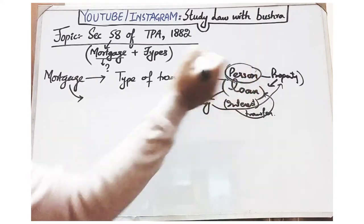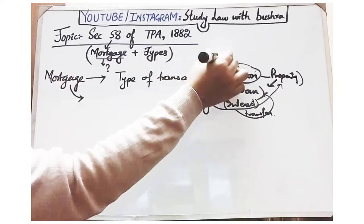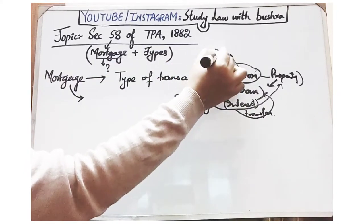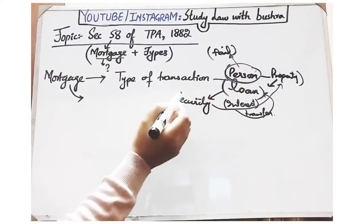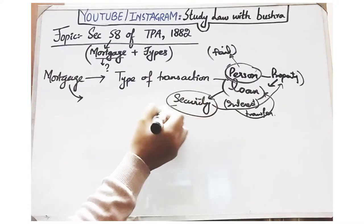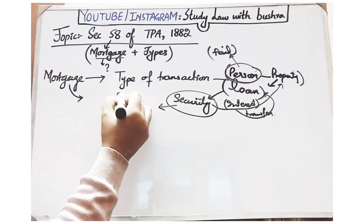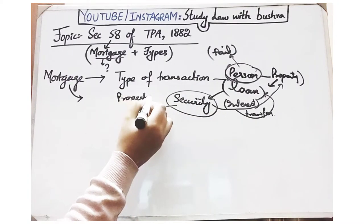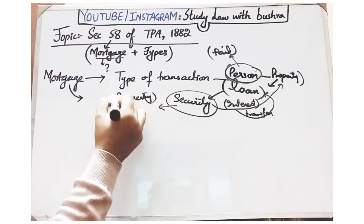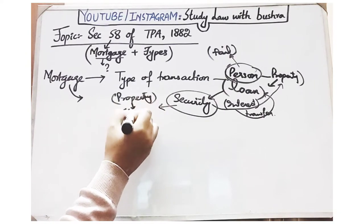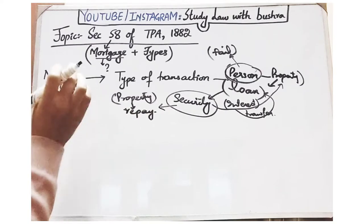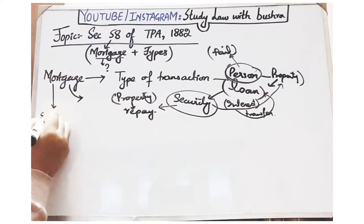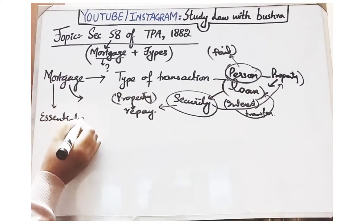Is security property dene ka maksad kya hota hai? In case agar woh pahla bhanda loan wapas karne mein nakam ho jaye, to aisi surat mein dusra bhanda us ki property se apna woh loan recover kar sakta hai. Yani dusare bhande ko security kyun di jati hai? In order to recover the loan.